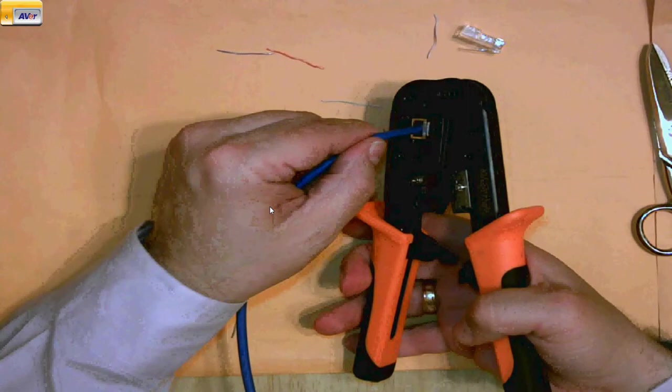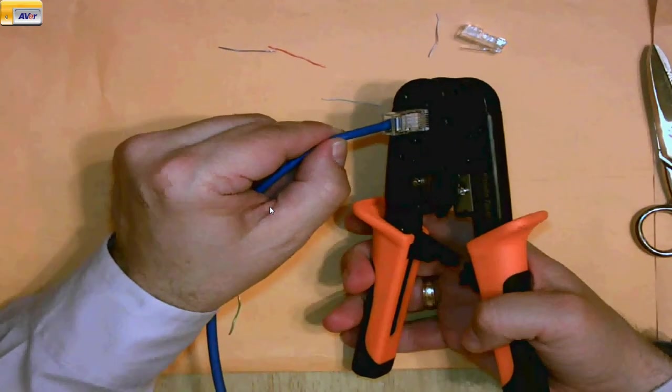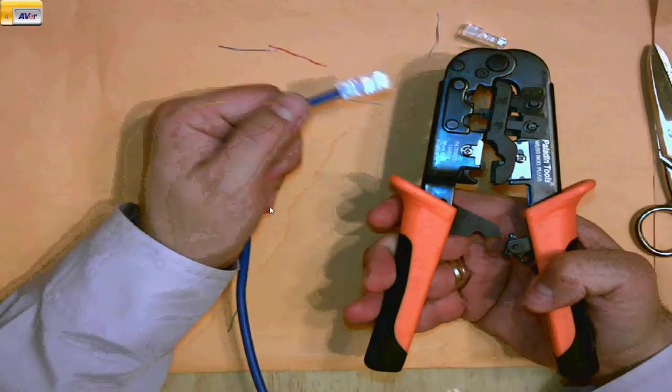And I'm going to crimp. Pull down to crimp. Notice it stays shut. I always like to crimp twice and three times. Pull it out. If it gets stuck stop because you're doing something wrong. And then before you do anything else close your tool.